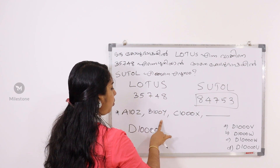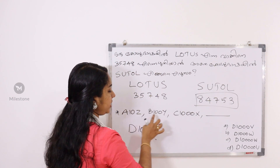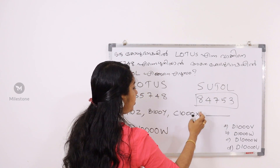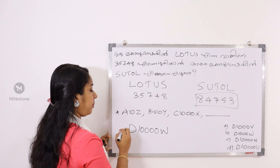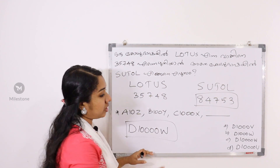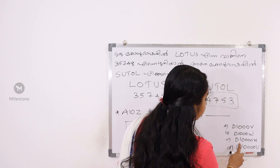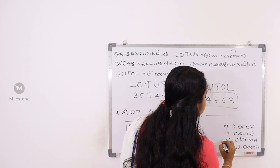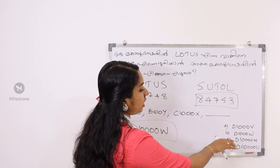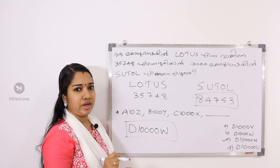Next question: Z, Y, X. Let's see the numbers: X, Y, Z — what is it? W. So W, X, Y, Z. The answer is D, 10,000, W. Option C is the answer. If you want to write the numbers, you can write them.